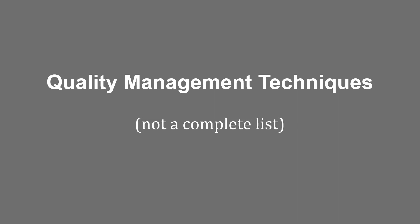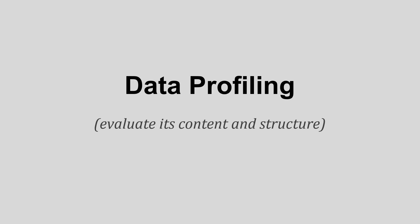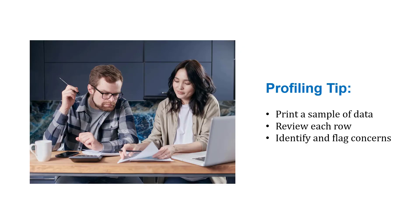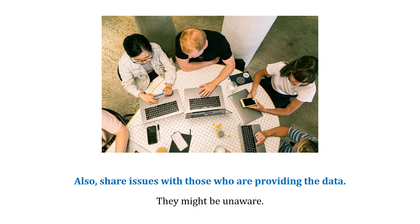Here are some techniques as we think about trying to achieve those quality objectives. So maybe we use data profiling, which is making sure we understand the data, its content, and its structure. One way to do that is to print a sample of the data — maybe 100 rows — review each row, and then identify and flag concerns that we see. Then we can share those issues politely with those who provide the data, because they could be unaware.